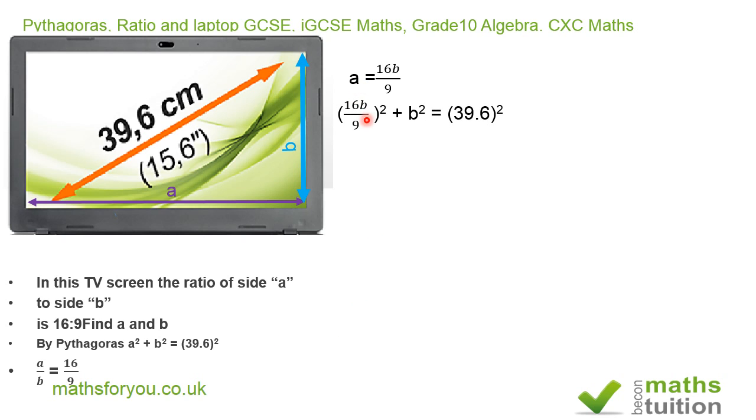We then have that (16b/9)² + b² = (39.6)², because this is now our a squared plus b squared equals the diagonal squared.